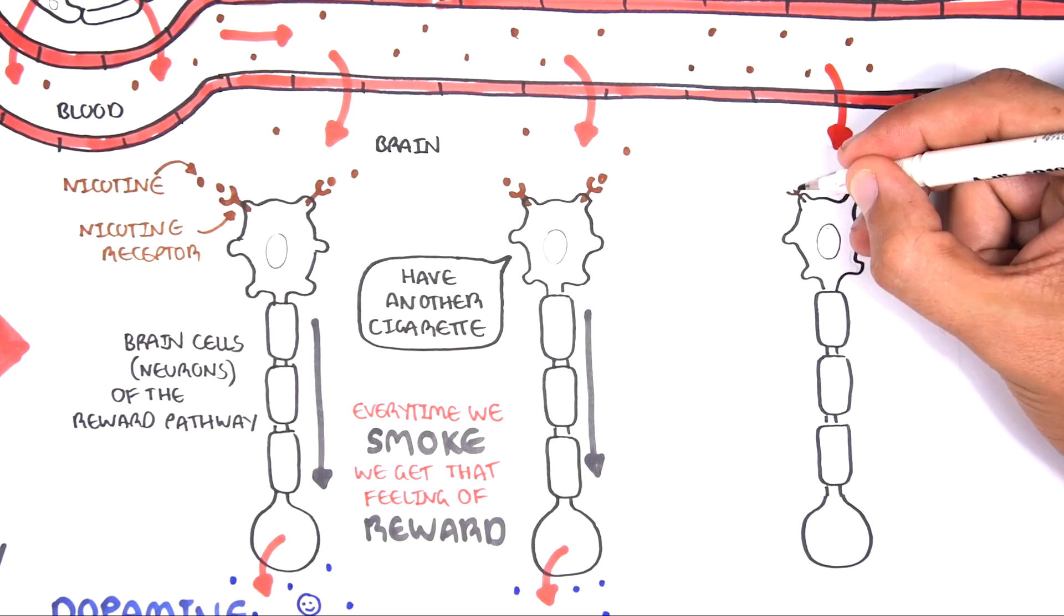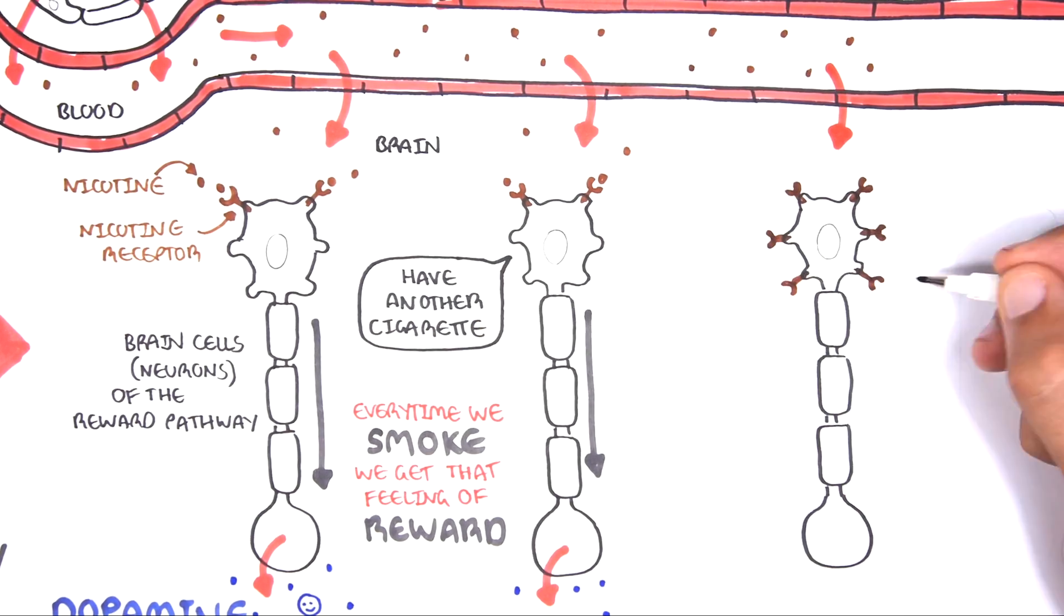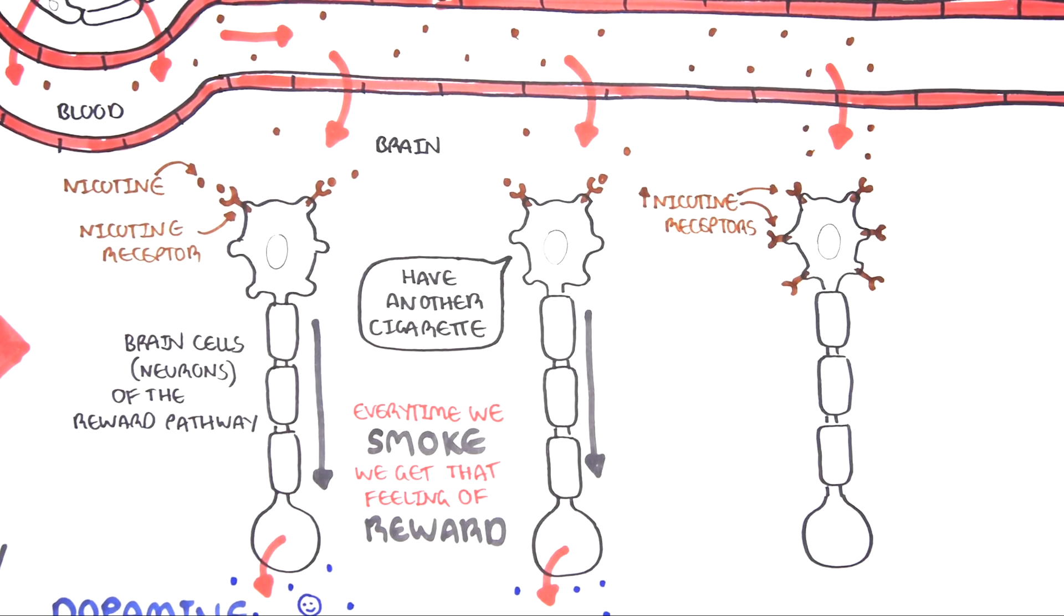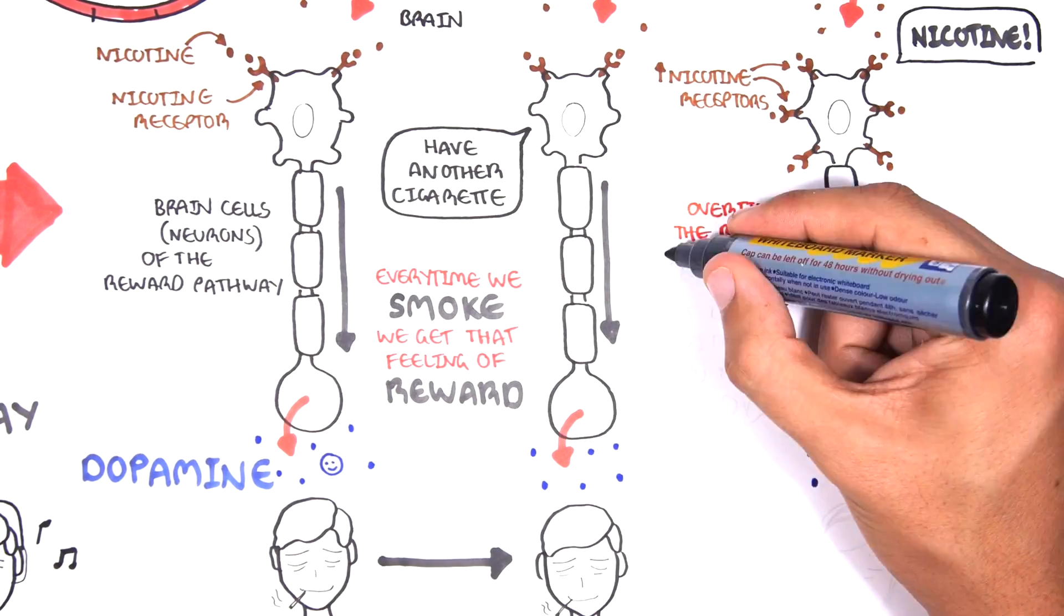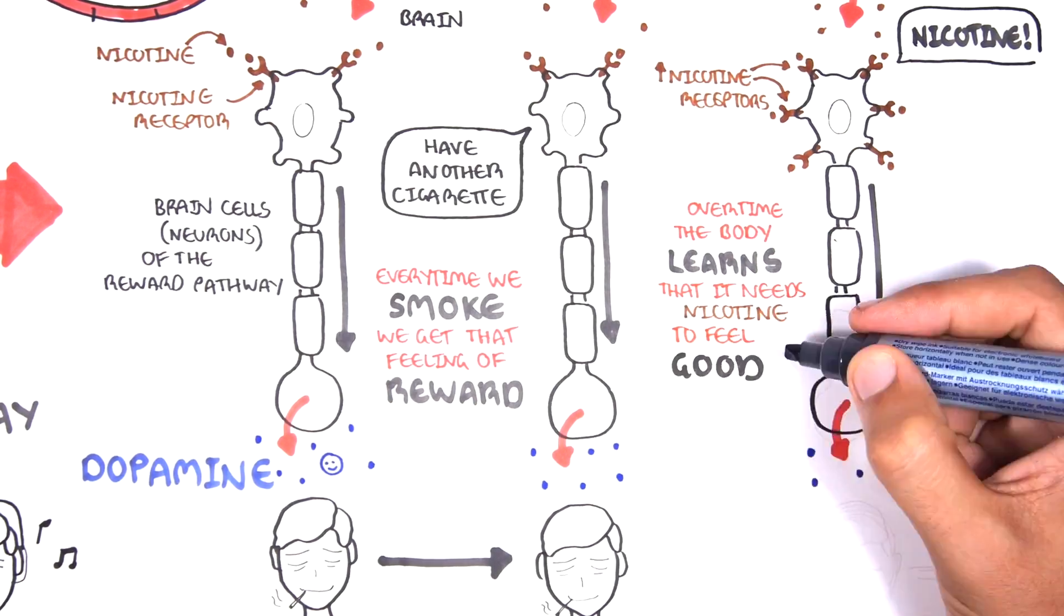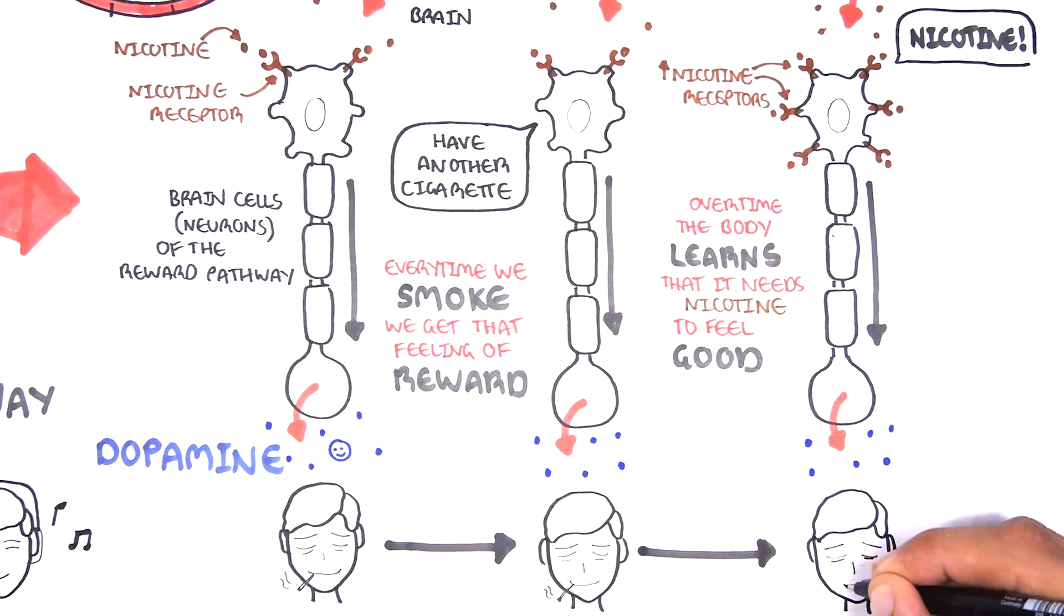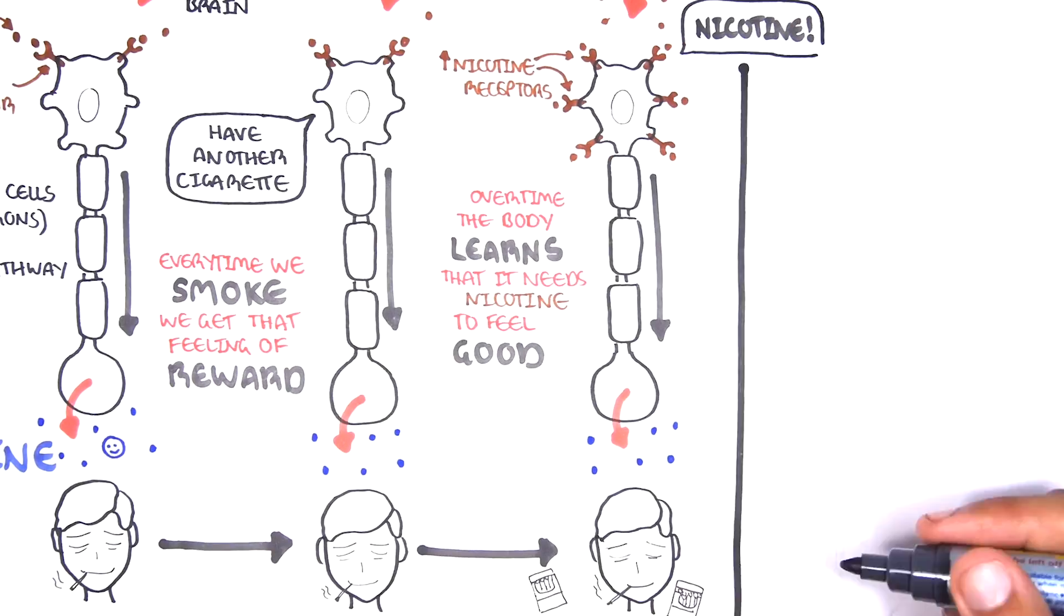The longer you smoke, the more and more nicotine receptors are created, and each one craves its nicotine fix. Over time, the body learns that it needs nicotine to feel good, but it can never get enough. That's why it's so hard to quit.